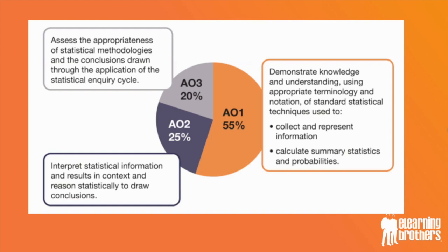AO2, which is a quarter of the papers, interprets statistical information and results in context — so this is you drawing conclusions from data that you're given or from data that you calculate. And AO3, which is less than a quarter — just a fifth of the two papers — assesses the appropriateness of statistical methodologies and the conclusions drawn through the application of the statistical inquiry cycle. This is you analysing the entire study cycle: how data was collected, analysed, represented, and how valid the method was.